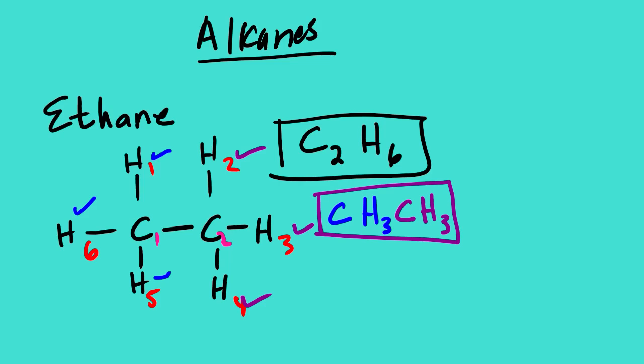At tertiary level there is another way to represent this, which is the line-angle structure. Some call it stick figures or stick structure. We cannot represent methane using a stick structure. The stick structure of ethane is simply a line. Each end of the stick represents a carbon, but we don't write the C's — we simply represent it using a stick.